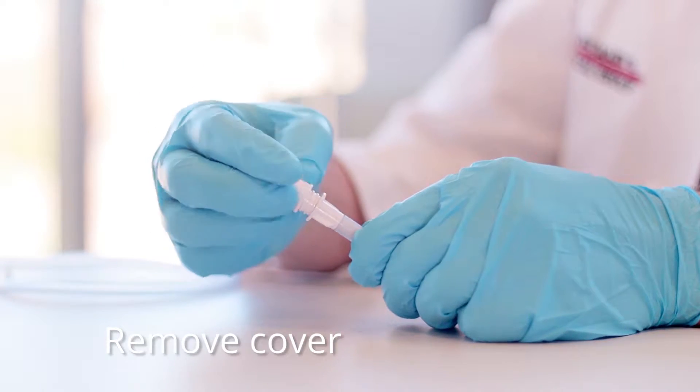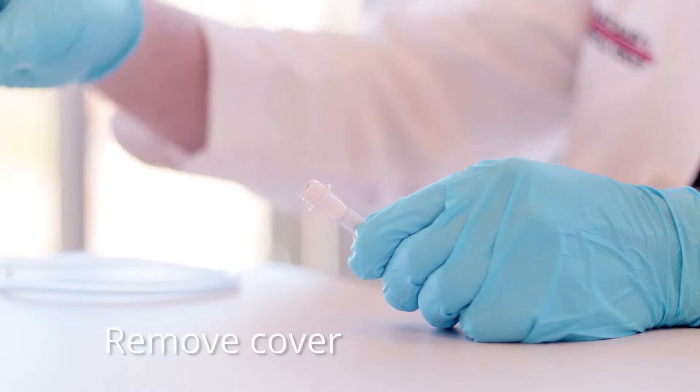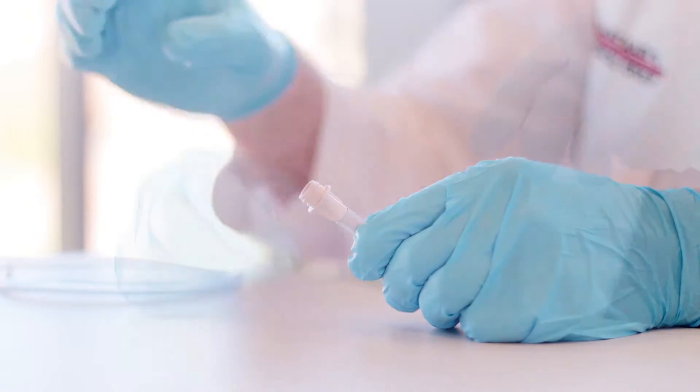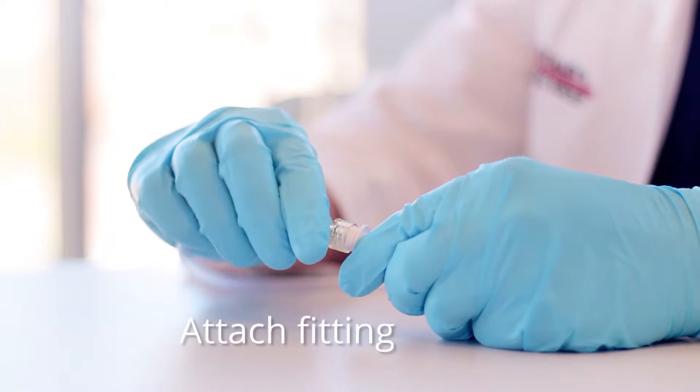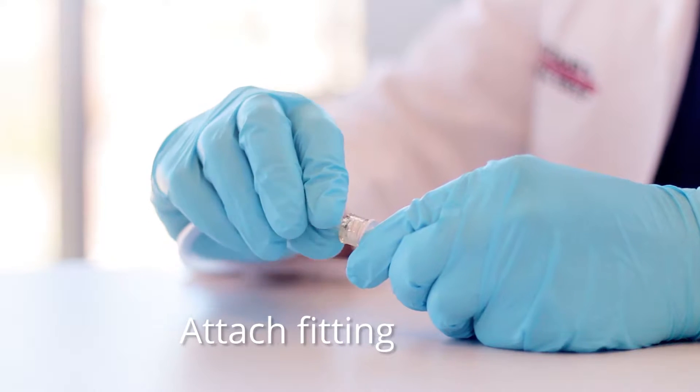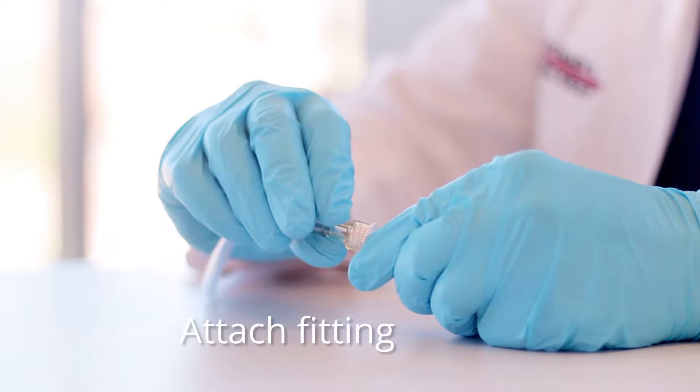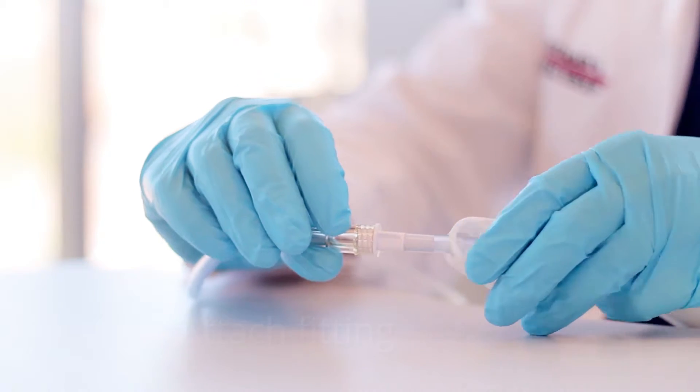Remove and save the cover from the large bore male fitting on the distal end of the quick test filter chamber. Attach the large bore female fitting on the 18 inch tubing set to the large bore male fitting on the distal end of the filter chamber.